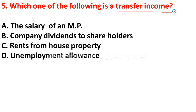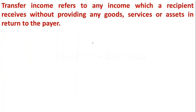Question 5: Which one of the following is a transfer income? A) salary of an MP, B) company dividends to shareholders, C) rents from house or property, D) unemployment allowance. Transfer income is income paid by the government to citizens for nothing — the government will not receive any goods or services in return. The answer is D — unemployment allowance. Transfer income refers to any income which a recipient receives without providing any good, service, or asset in return.